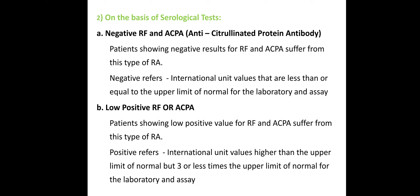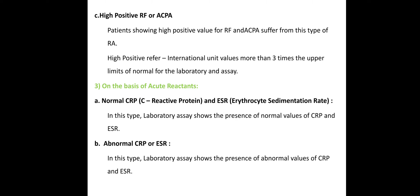Classification on the basis of serological tests: you can test RF (rheumatoid factor) and ACPA (anti-citrullinated protein antibody). First type is negative RF and negative ACPA. Second type is low positive RF or ACPA — less than or equal to the upper limit of the normal laboratory assay. Third type is high positive RF and ACPA, where the ACPA level is three times more than the upper limits.